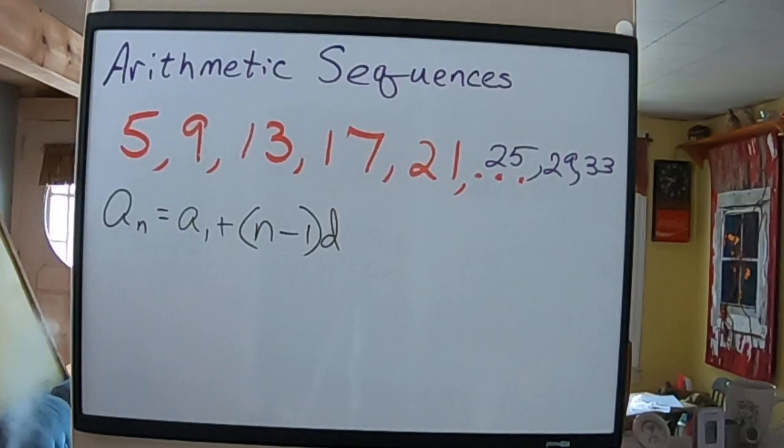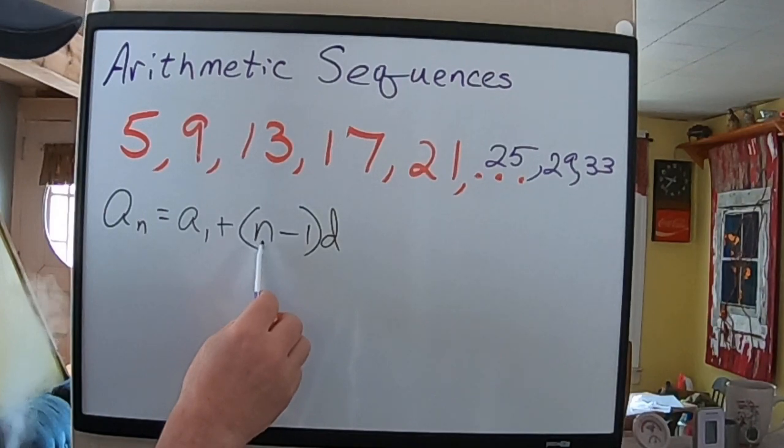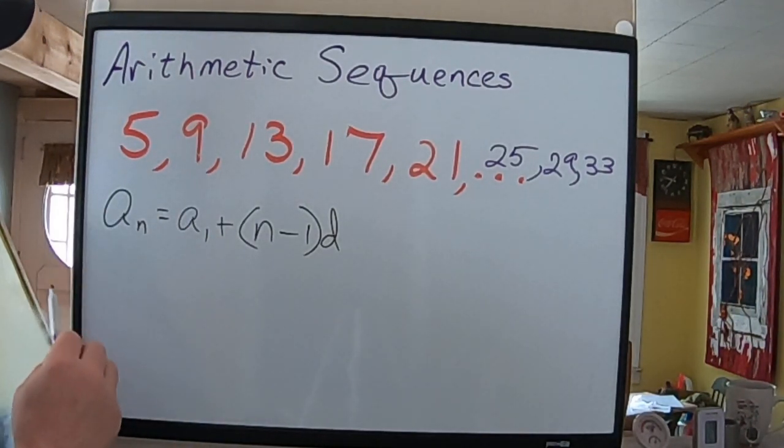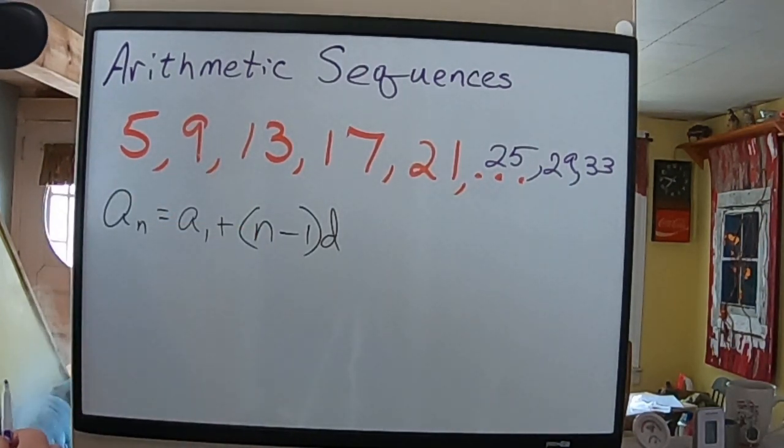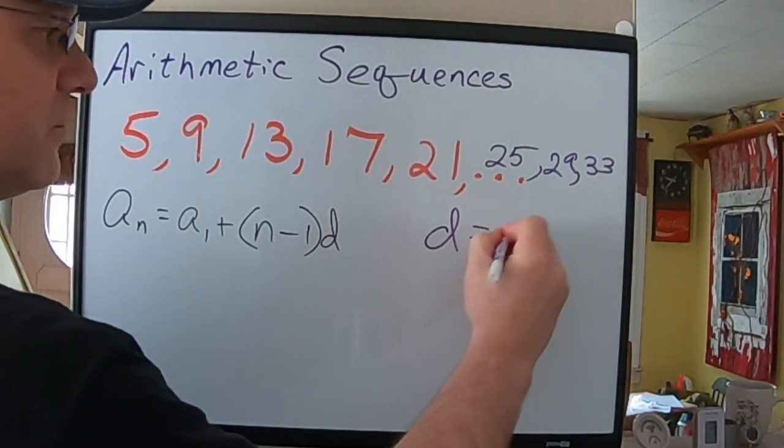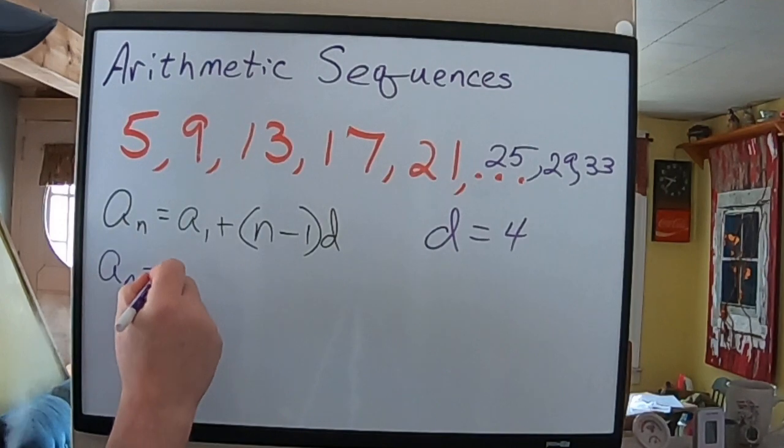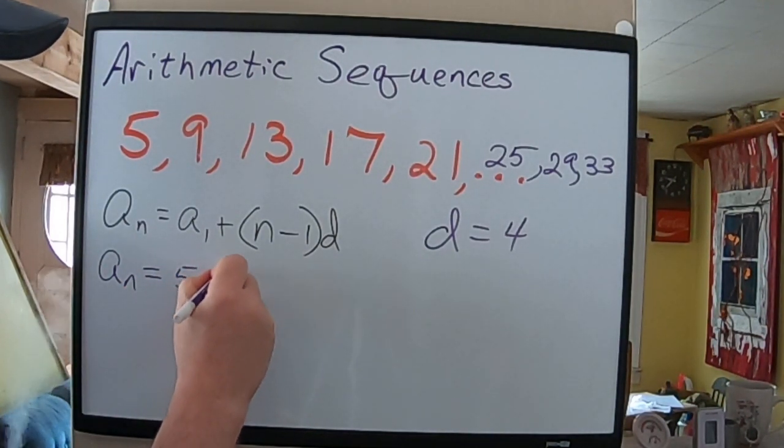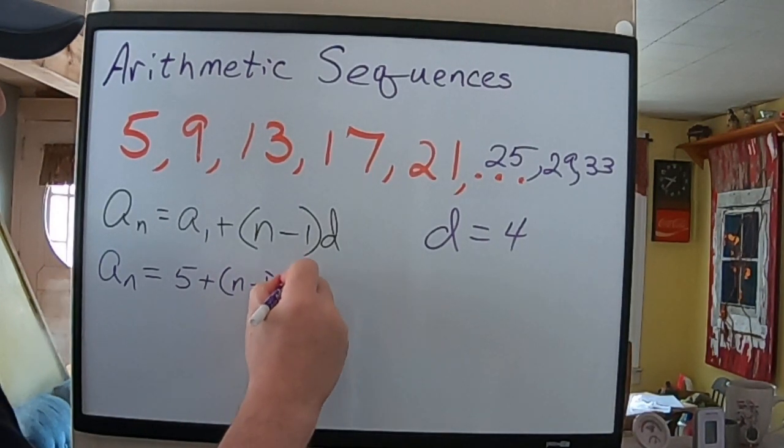And this is all in your textbook. N is the number of the term, A sub N is the Nth term, any particular term, whichever N that is. A sub 1 is your first term, and this is the formula. So, we know our D here was 4, so A sub N, we're going to leave N as the variable, is the first term, which we know is 5, plus N minus 1, times we know our common difference is 4.